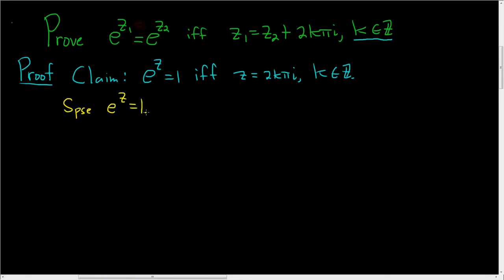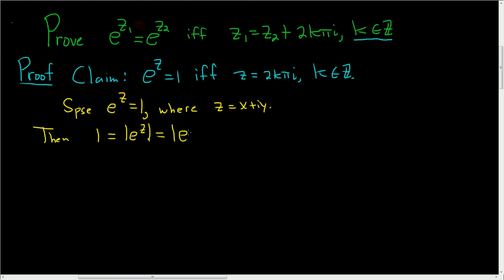What we'll do is look at the modulus of z. In this case, z will be x plus i·y. So then 1 is equal to the modulus of e to the z, because 1 is e to the z, so the modulus of 1 is 1. We can write z as x plus i·y, so this is the modulus of e to the x plus i·y. Using properties of exponents, this is the modulus of e to the x times e to the i·y. Then using properties of the modulus, this is the modulus of e to the x times the modulus of e to the i·y.